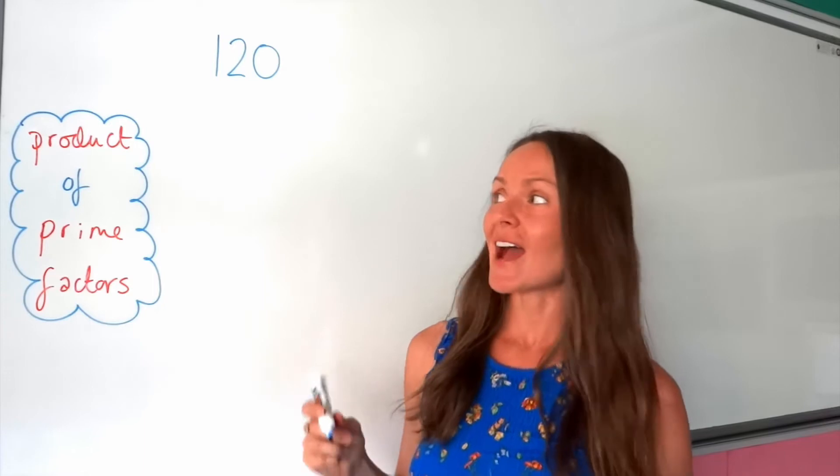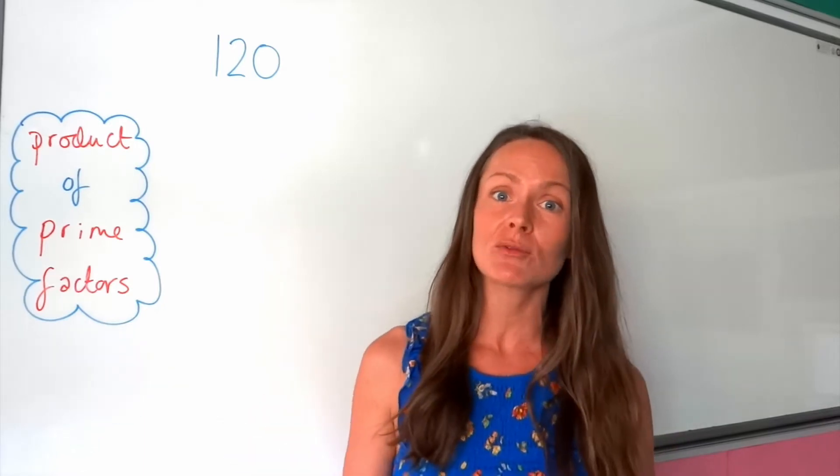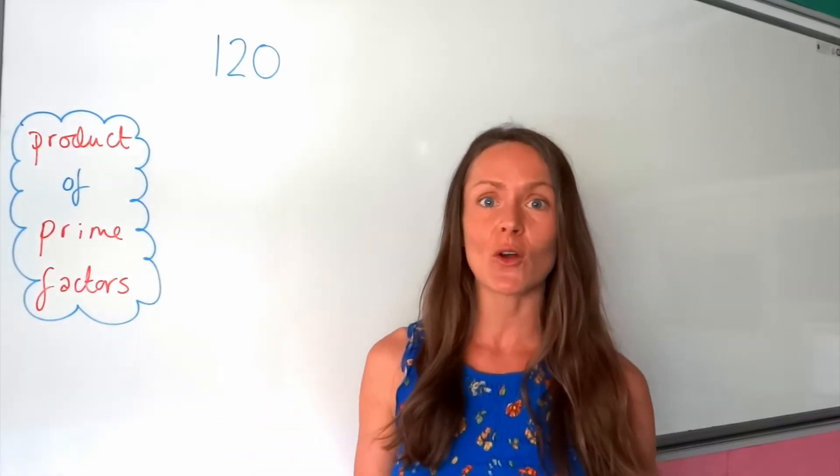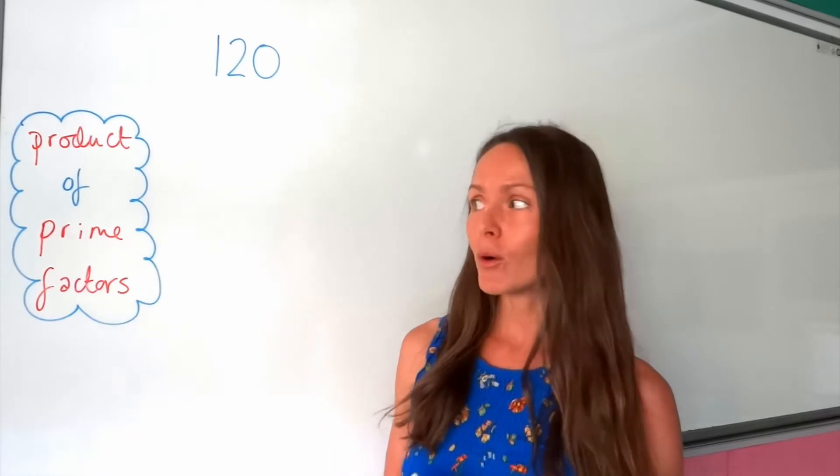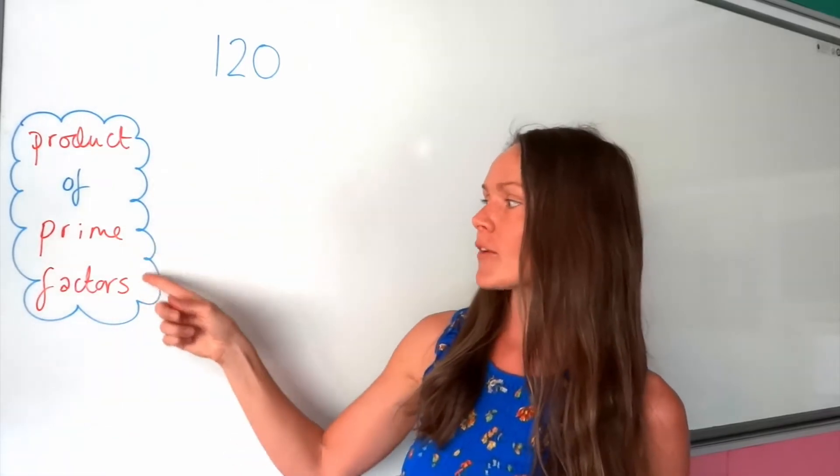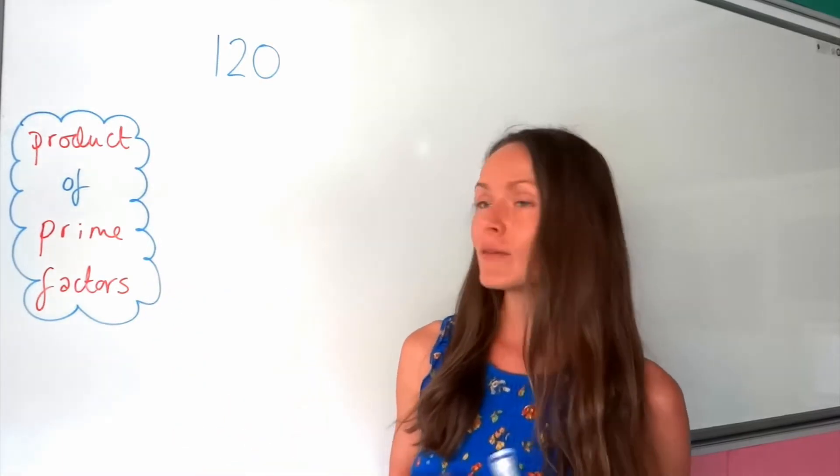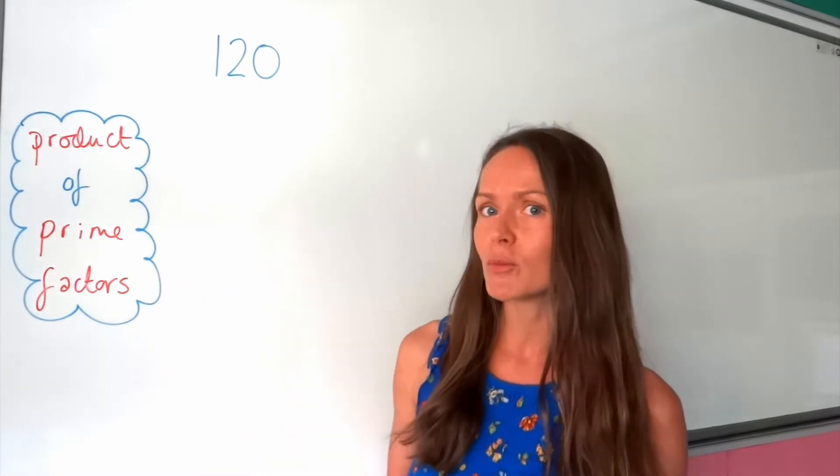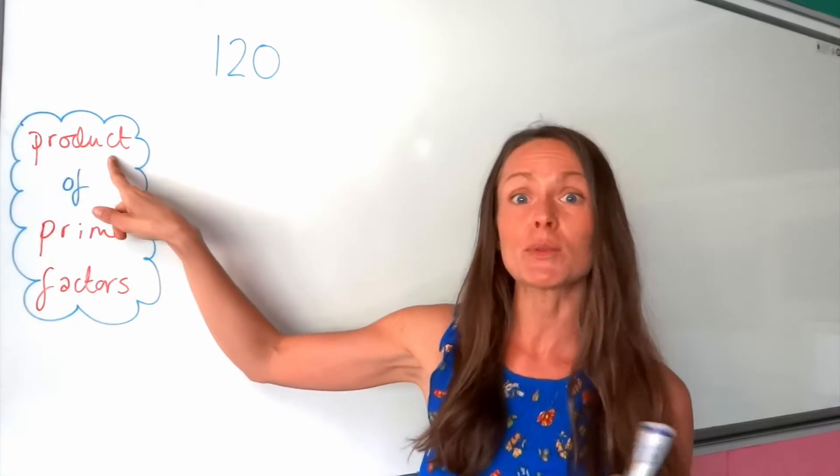Hey guys, I'm the MathsProf, and today I'm going to be showing you how to write a number as a product of its prime factors. Well, what you have to do is in the title really, you have to find the prime factors of the number and then write them as a product. So you have to multiply them together, because product just means multiply.